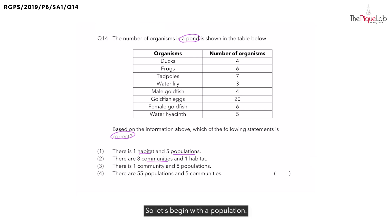So, let's begin with a population. A population is a group of organisms of the same species that live and reproduce together in the same place at the same time.